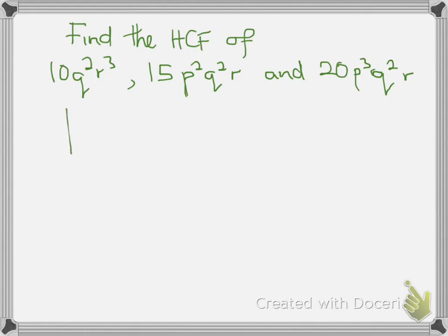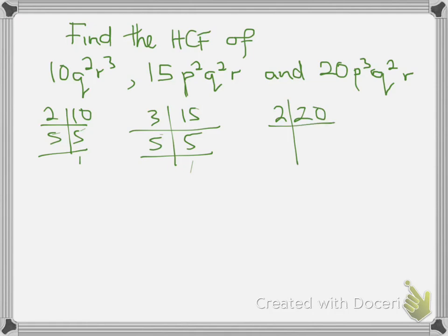Then for 10, 10 is 2 into 10 is 5, 5 into 5 is 1. For 15, the least prime factor is 3, 3 into 15 is 5. For 20 is 2, 2 into 20 is 10, 2 into 10 is 5, 5 into 5 is 1. Therefore, we've got our prime factors for all these numbers.